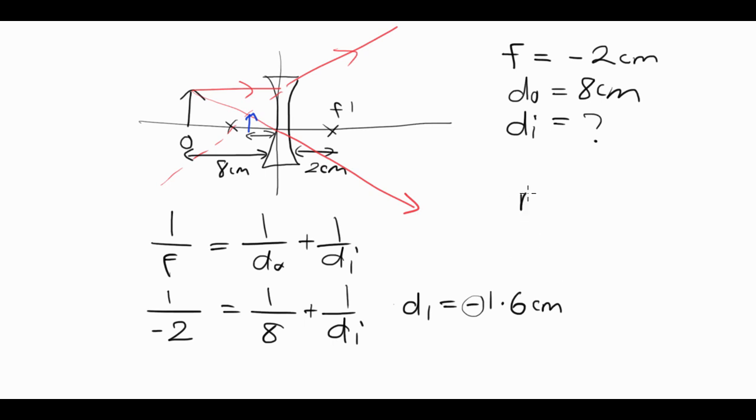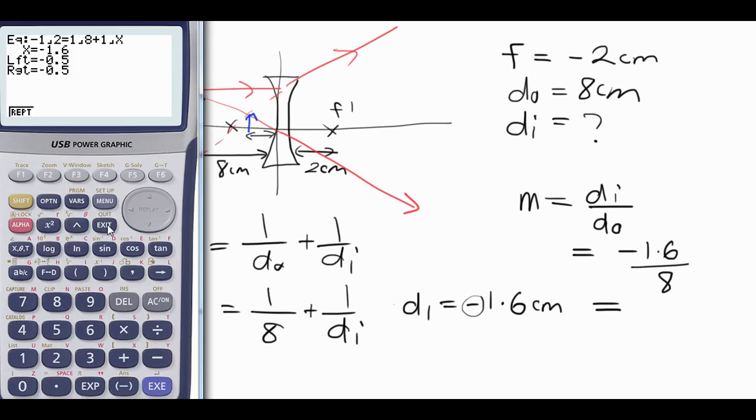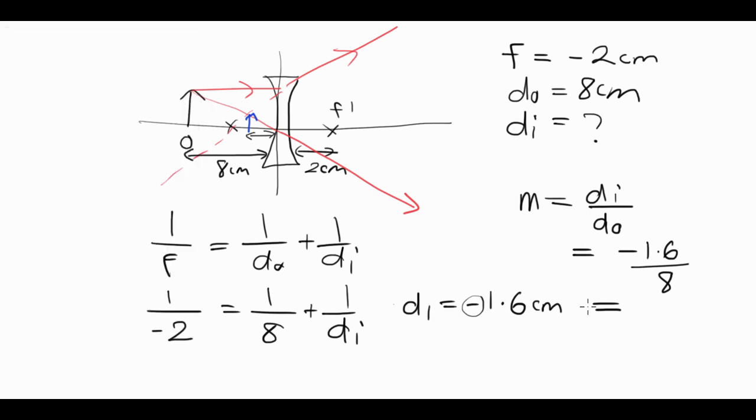We could then go away and work out the magnification of the image. We're expecting it to be diminished. Di over do, image distance was negative one point six divided by object distance, which is eight. So negative one point six divided by eight, and of course you all knew that it was going to be negative point two anyway. So negative point two. The negative sign is not very important, just tells us it's virtual. But point two would mean that it was diminished.